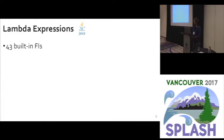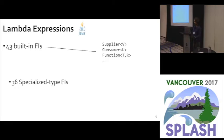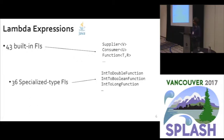Java provides 43 built-in functional interfaces, such as Function<T,R>, which means you're creating a lambda expression that accepts something of type T and returns something of type R. Out of these 43, 36 are specialized types of functional interfaces — for example, IntToDoubleFunction, a lambda that takes an int and returns a double.